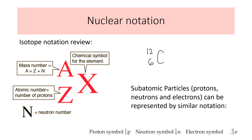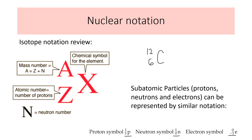We'll have some other symbols like a proton, a neutron, and an electron. Always the top number is the mass number and the bottom number is the number of protons. For the electron, it's given a negative one because it's like a negative proton.